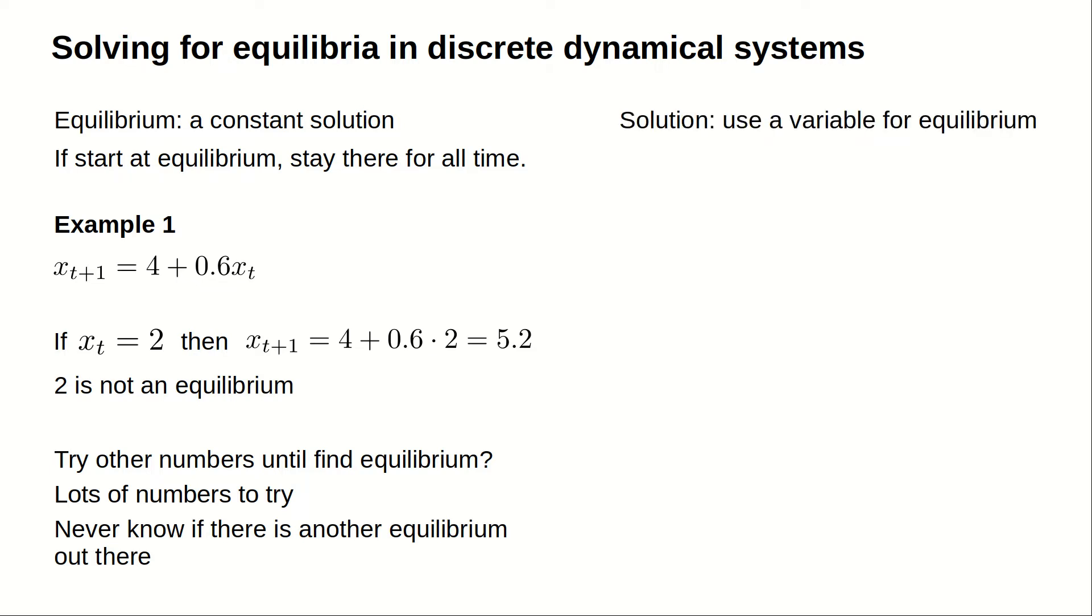We can let variables come to the rescue. Since a variable can stand for any number, we can try all numbers at once with a variable. Let's use the variable capital E for the equilibrium. If we plug in x sub t equals E into the dynamical system, we can see if we get E back out for x sub t plus 1.